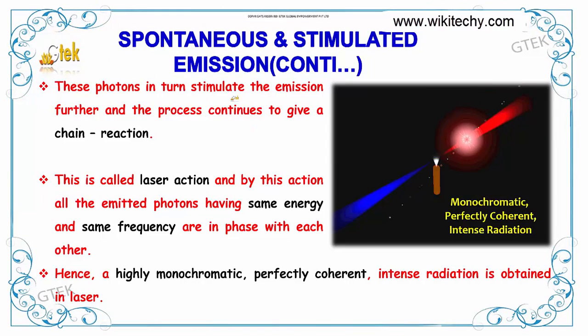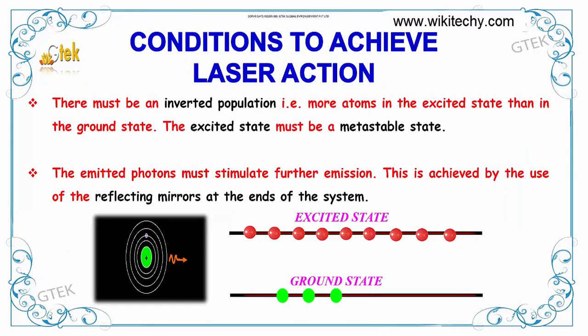These photons in turn stimulate the emission further and the process continues to form a chain reaction. This is called laser action. By this action, all the emitted photons are the same energy and same frequency and in phase with each other. Hence, a highly monochromatic, perfectly coherent, intense radiation is obtained in laser.